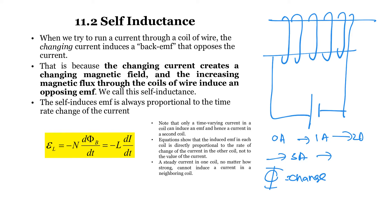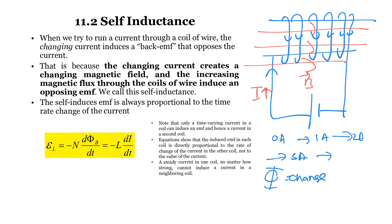For self-inductance: if you have voltage here, the current is produced, and the original B is in one direction. When the current is increasing, the self-induced B will oppose the original change in magnetic flux, producing a B induced in the opposite direction. This is self-inductance — the same principle as mutual inductance, but without a second coil nearby.